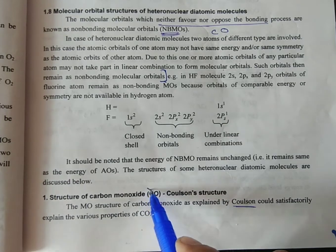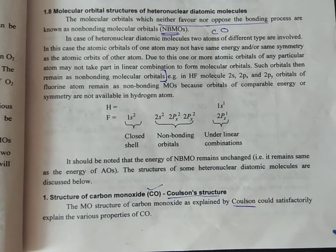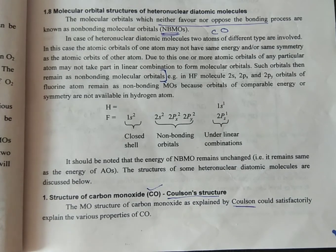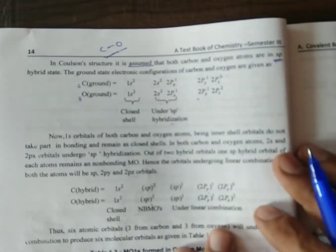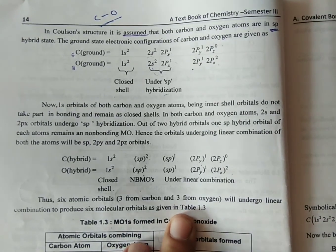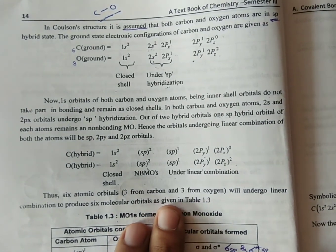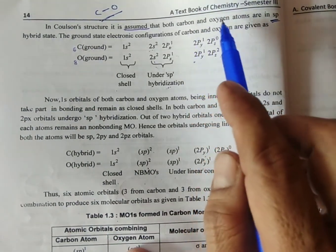We are going to discuss the CO, which is carbon monoxide, molecular orbital diagram. This CO diagram is associated with Coulson's work. The scientists have explained the Coulson structure, which is shown in this diagram.